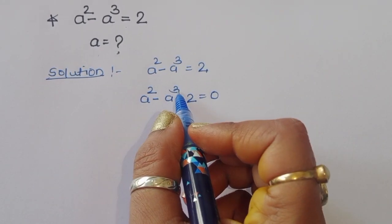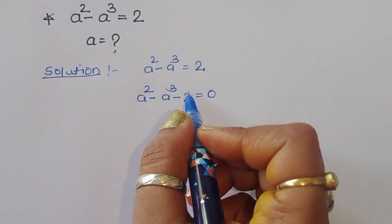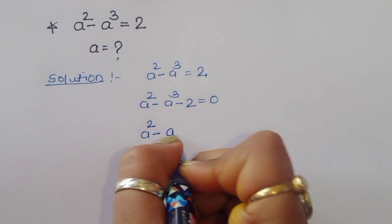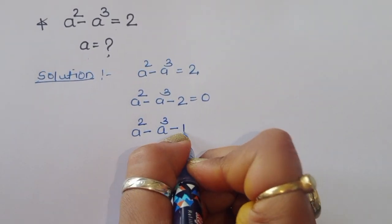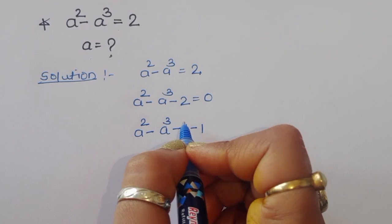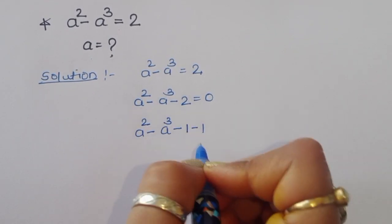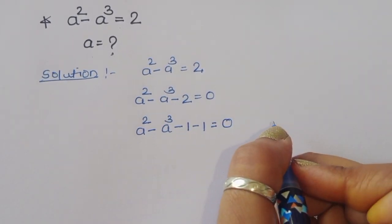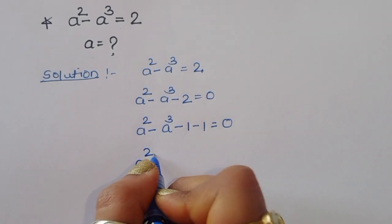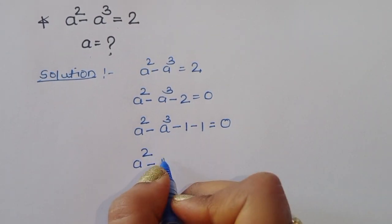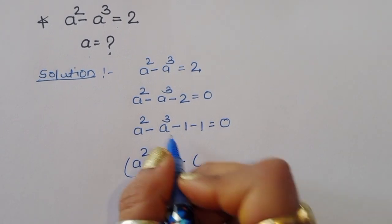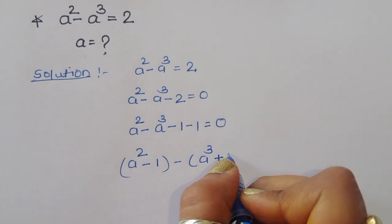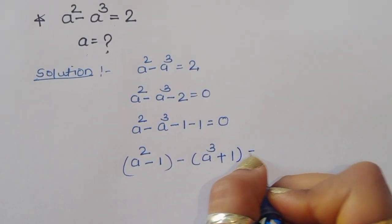Now you can see this has a square form and a cube form. So we are converting the 2 by writing it as 1 plus 1, giving us a squared minus a cubed minus 1 minus 1 equals 0. We take this minus 1 minus 1, so: a squared minus 1 minus a cubed minus 1 is equal to 0.